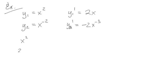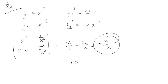y2 prime is negative 2x to the negative 3. So x squared 2x, 1 over x squared, negative 2 over x cubed. Chica-choo, chica-choo, determinant, negative 2 over x minus 2 over x is negative 4 over x. So this is important. This means that there's not going to be a solution when x is equal to 0.